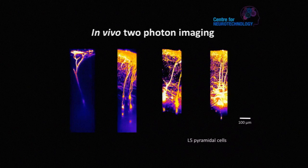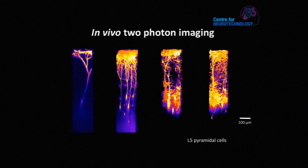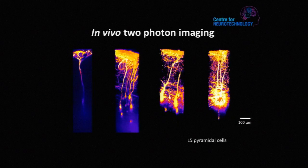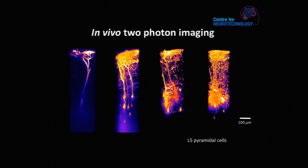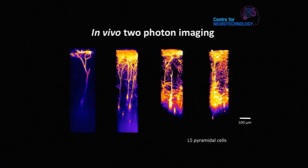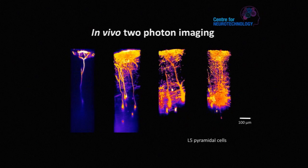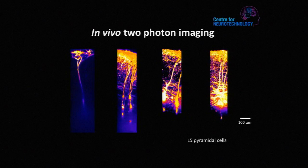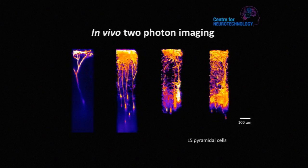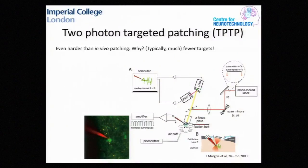Using two-photon imaging, we can image in vivo the elements of these circuits — that's another tool in the toolbox. So let's put that together with patch clamping. This was developed by Troy Magri, originally in the early 2000s: two-photon targeted patching.